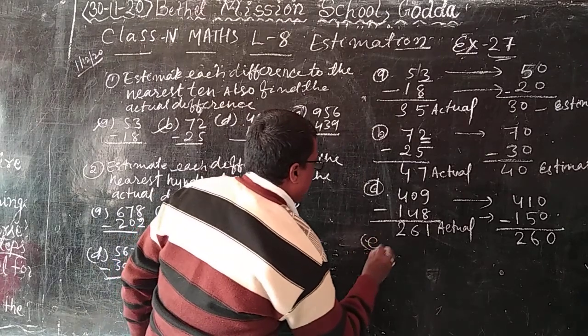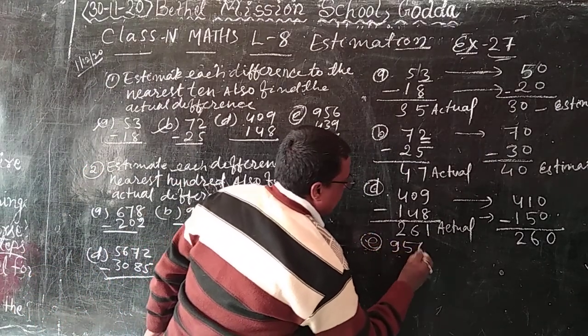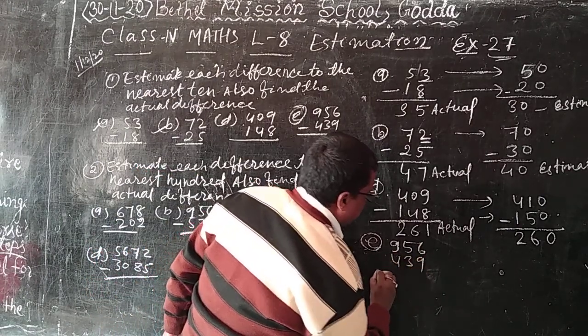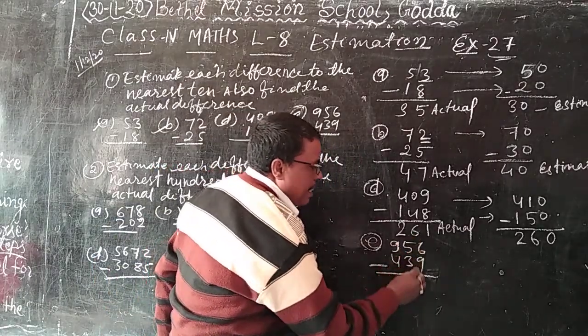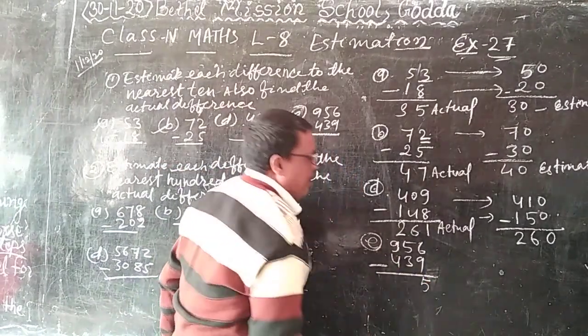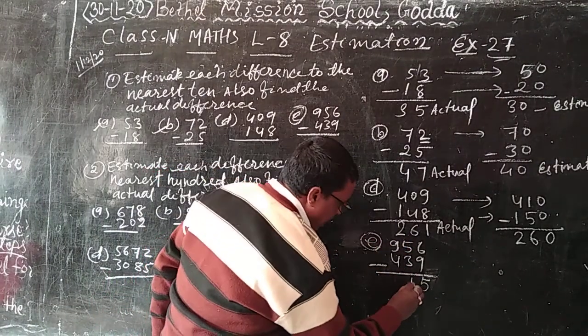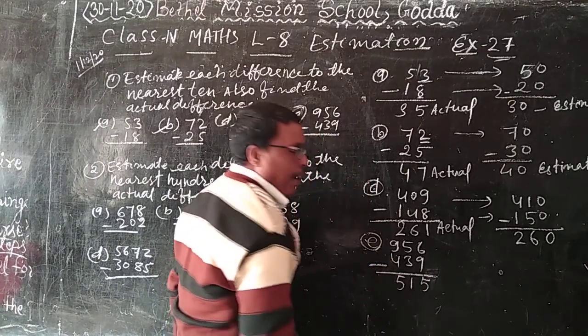E number, 956 minus 439. 16 minus 9, 7. 14 minus 3, 1. And 9 minus 4, 5. 517 actual.